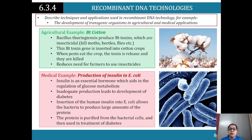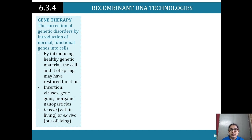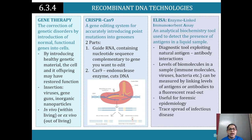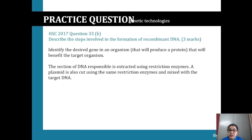Recombinant DNA technology examples include BT cotton (agriculture) and production of insulin in E. coli bacteria (medicine). Gene therapy corrects genetic disorders by introducing healthy genetic material to cells, potentially restoring function in offspring. CRISPR-Cas9 has two parts: guide RNA containing the nucleotide sequence complementary to the gene you want to edit, and the Cas9 nuclease enzyme that cuts the targeted DNA. ELISA - enzyme-linked immunosorbent assay - is an analytical biochemistry tool used to detect the presence of antigens in a liquid sample, exploiting natural antigen-antibody interactions for diagnostic purposes in forensics and epidemiology.